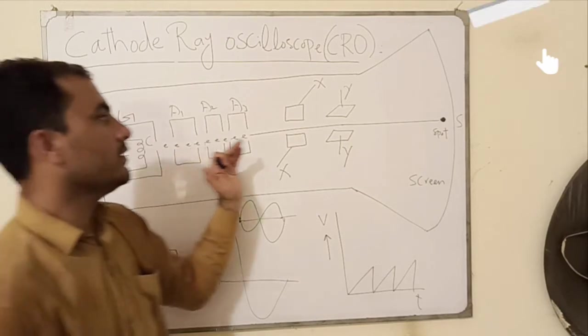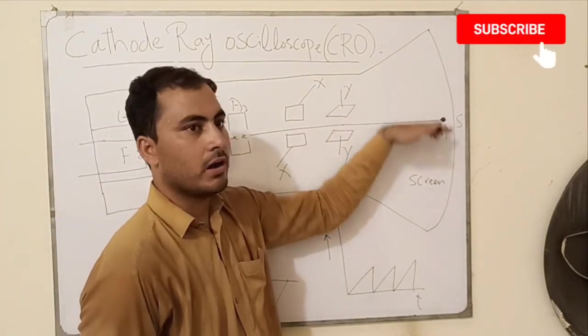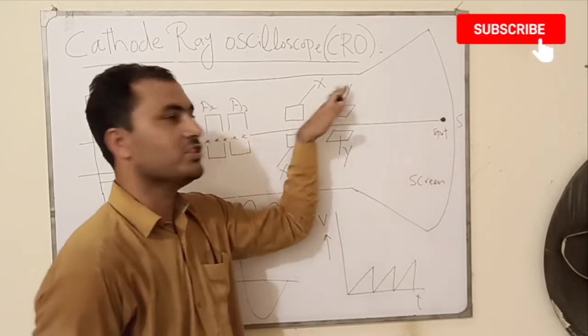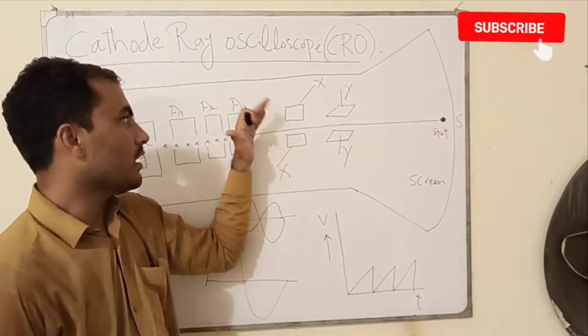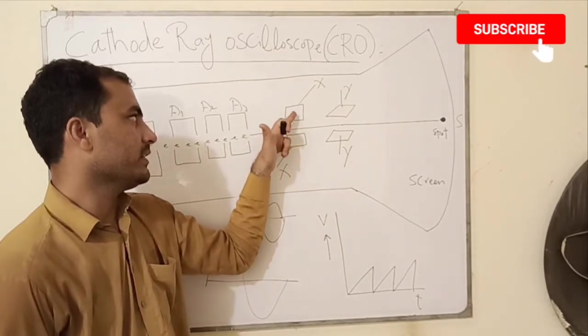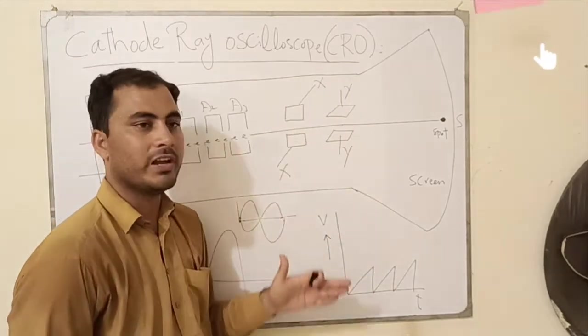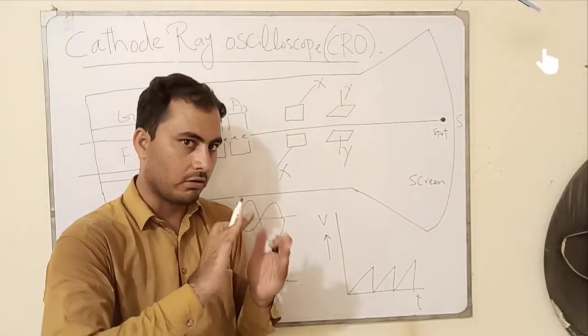Now we can move this beam up and down, left and right with the help of these deflecting plates. There are two kinds or two sets of plates here in Cathode Ray Oscilloscope which are basically the X plates and the Y plates.